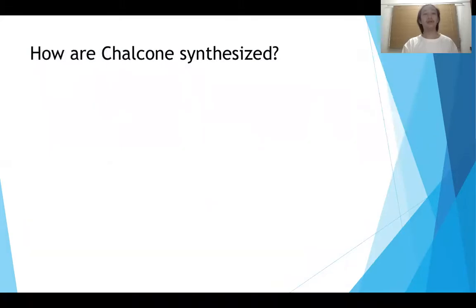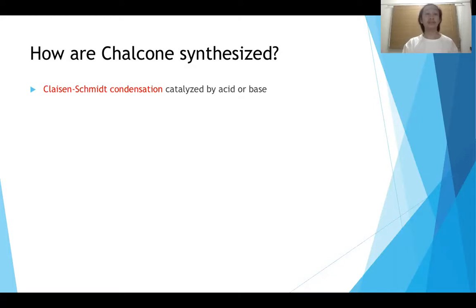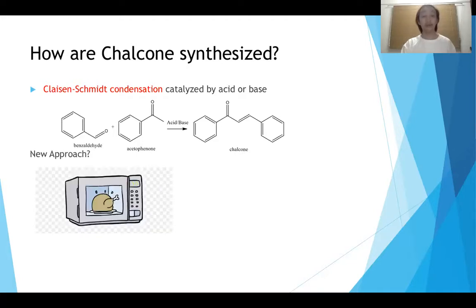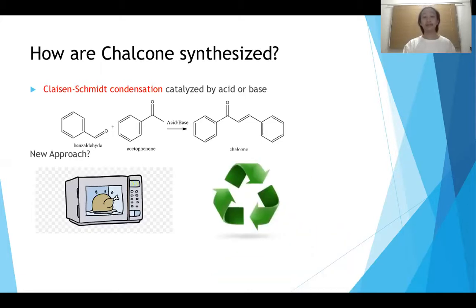How is chalcone going to be synthesized? Conventionally, it is synthesized by the Claisen-Schmidt condensation, catalyzed by an acid or a base. Here's a simple equation of the condensation. In my new approach, I'm going to use microwave irradiation accompanied by green chemistry, which is the use of a catalyst in the chalcone synthesis.